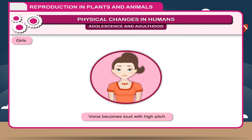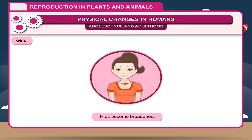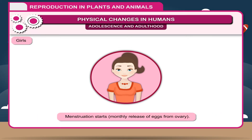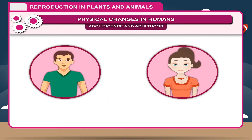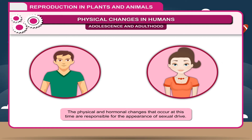In girls: 1. Voice becomes loud with high pitch. 2. Breasts start developing and become larger. 3. Hips become broadened. 4. Development of hairs in the pubic area. 5. Menstruation starts — monthly release of eggs from the ovary.